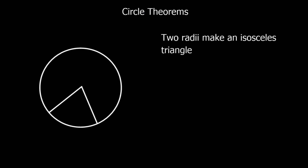Two radii make an isosceles triangle. So if ever you've got a triangle and you've got two radii in it, it's going to be isosceles, because the radius is the same length no matter where it is.